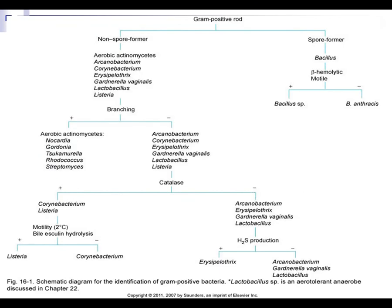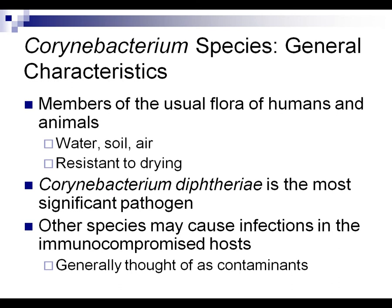Here's a good flow chart to remember. Catalase is an important test for your non-spore forming gram positive rods. Branching is a key characteristic — Nocardia is a branching gram positive rod. If you see spores, you know it must be a Bacillus. If it's aerobic, it must be Bacillus. H2S production is an important test, and we'll also talk about motility and bile esculin hydrolysis to differentiate Listeria from other gram positive rods.